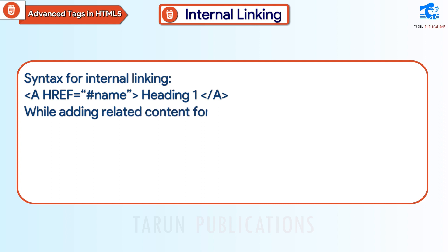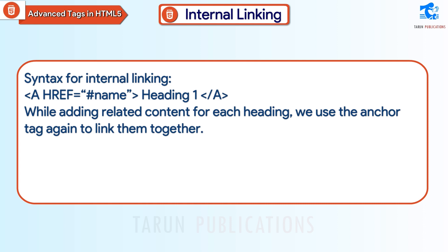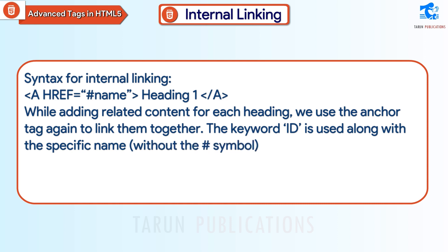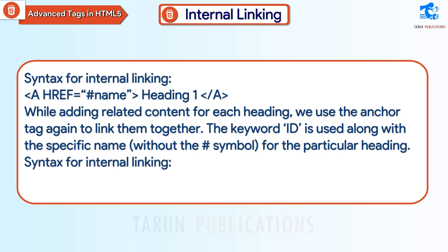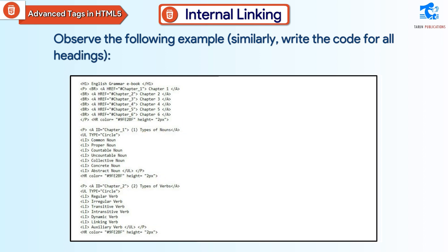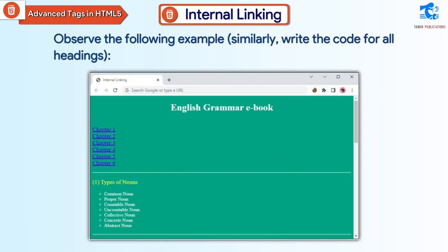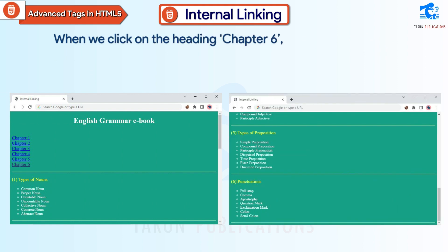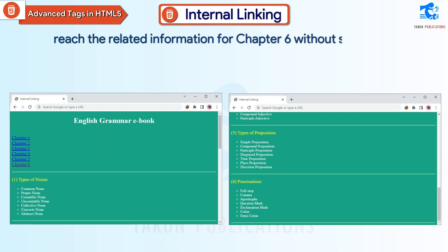While adding related content for each heading, we use the anchor tag again to link them together. The keyword id is used along with the specific name, without the hash symbol, for the particular heading. Syntax for internal linking: a id="heading1" /a. Similarly, write the code for all headings. Output: When we click on the heading Chapter 6, we will automatically reach the related information for Chapter 6 without scrolling.